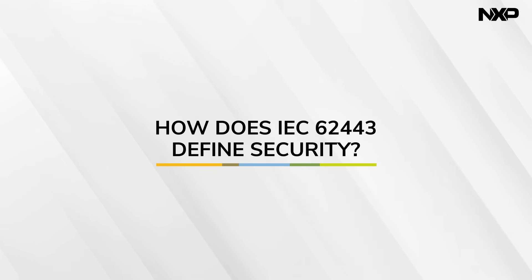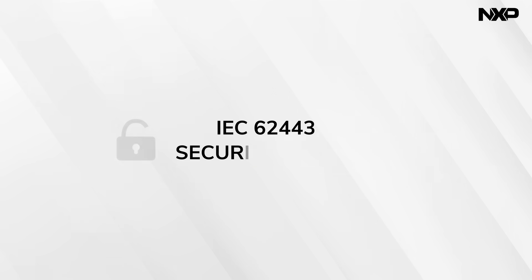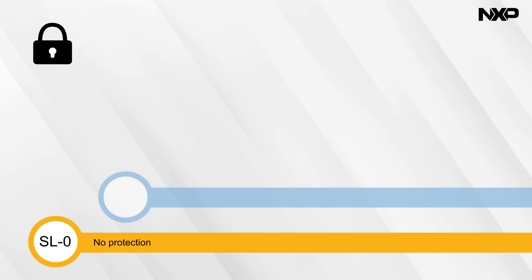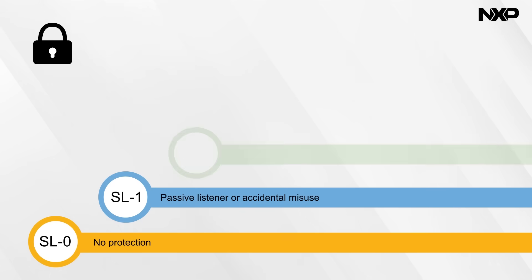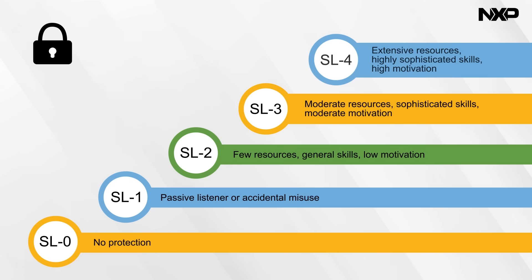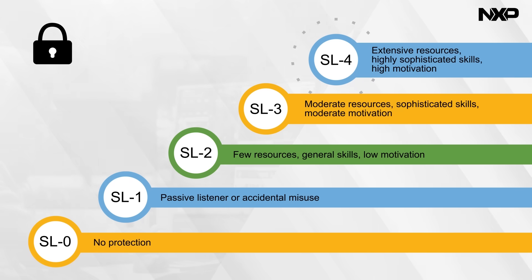Protecting every system against every threat imaginable isn't practical or necessary, so IEC 62443 defines different security levels for different cybersecurity use cases. Each step up in security level is intended to protect against more sophisticated threats with greater resources and greater motivation to compromise the system.